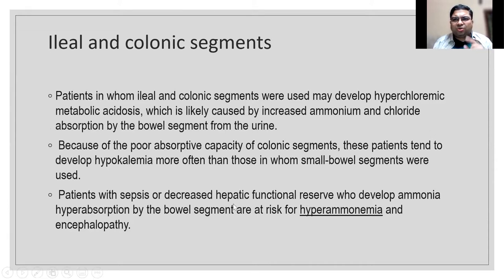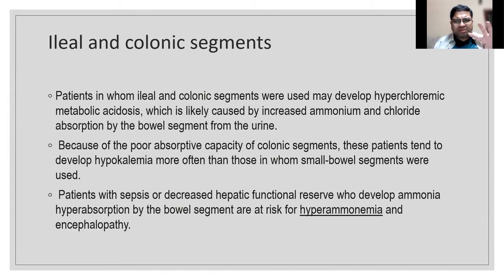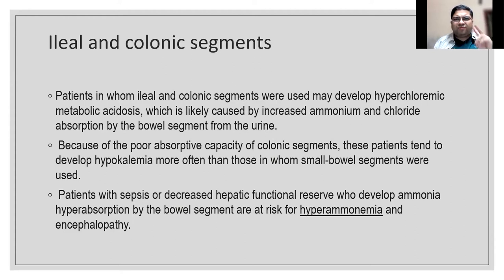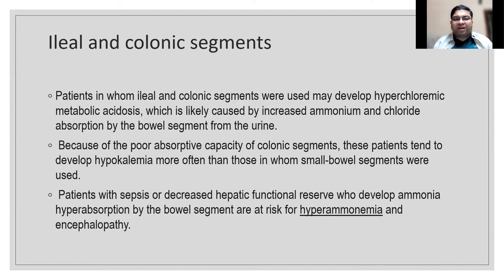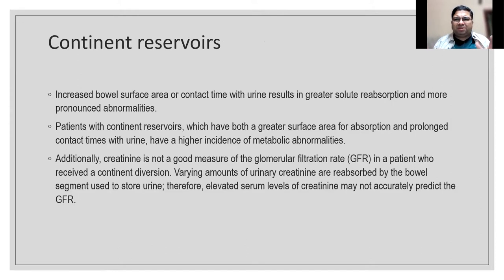With ileal and colonic segments - very important - patients develop metabolic acidosis with hypokalemia, hyponatremia, hyperchloremia, hypomagnesemia, and hypocalcemia. All absorption is in disarray. This is magnified in renal insufficiency. Hypokalemia causes lethargy; hypocalcemia causes bone problems; there is reduced absorption of vitamin B6 and vitamin B12. In sepsis, there is hyperabsorption of ammonia, causing encephalopathy.